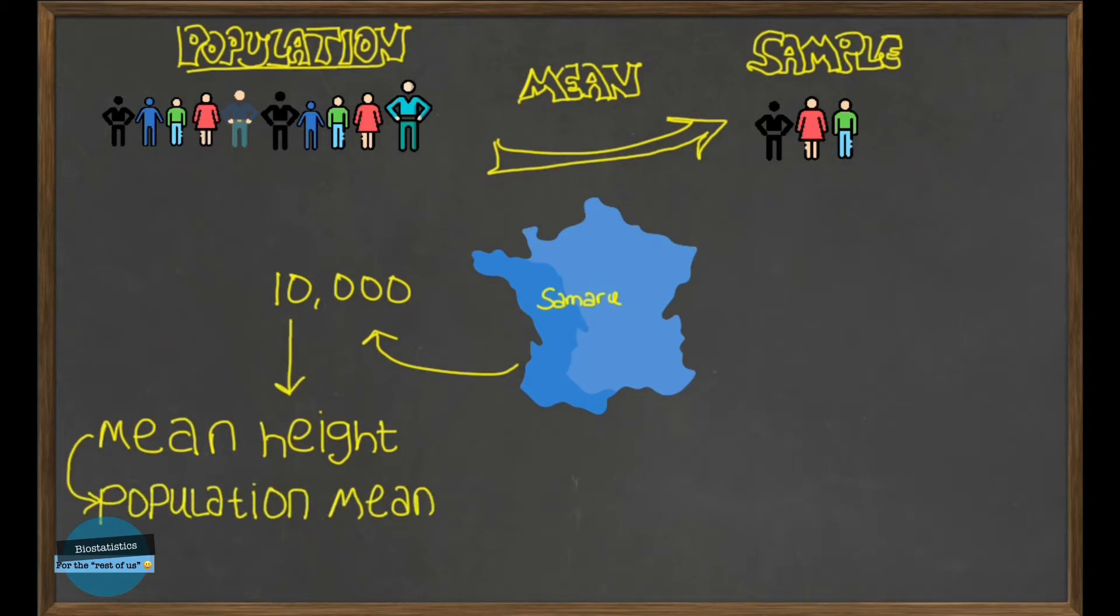And one thing for us to note here is that this is something we refer to as a parameter. A parameter is any measurable characteristic of a population. Now, because this mean height is a number concerning a characteristic of the population, we say it's a parameter.